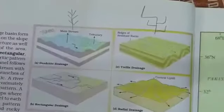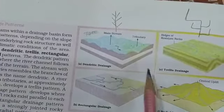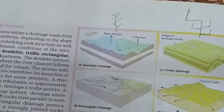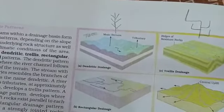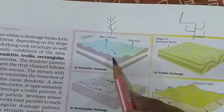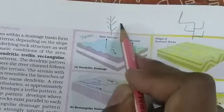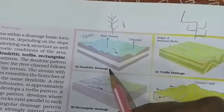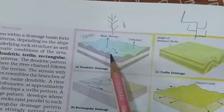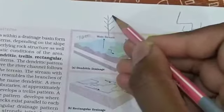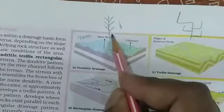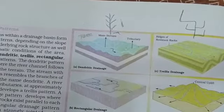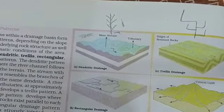Let's discuss the first pattern — dendritic drainage. You can see in this image that the river creates a tree shape, so we call it dendritic drainage. This is the main Ganga river and there are many tributaries which join it, forming a tree type pattern. Dendritic drainage means the river channel follows the slope of the terrain and branches like a tree.